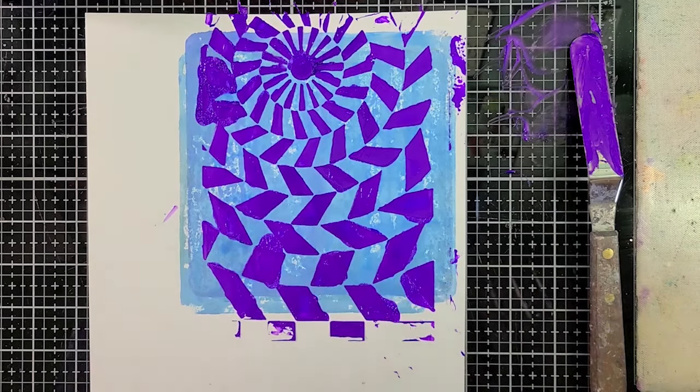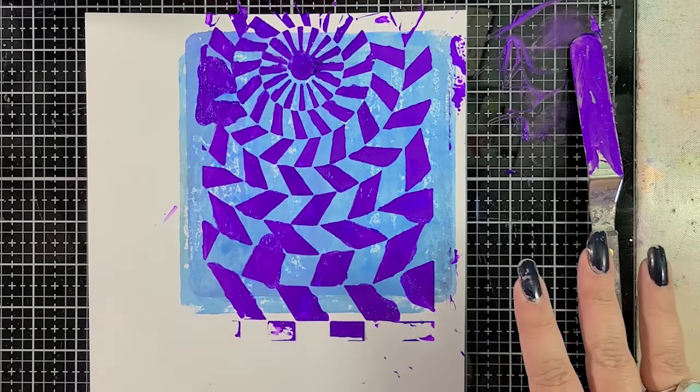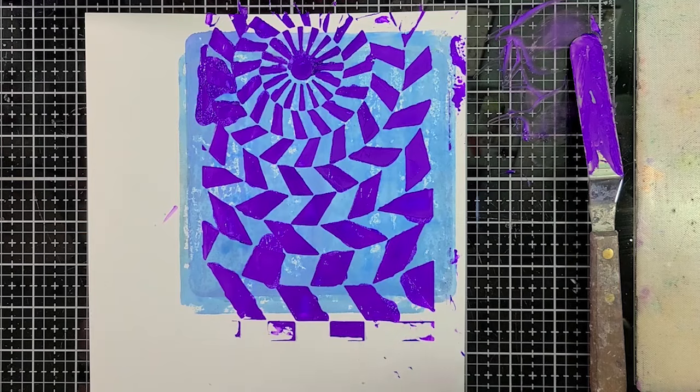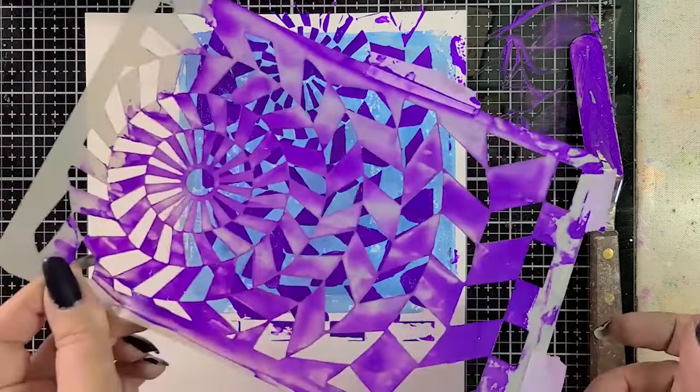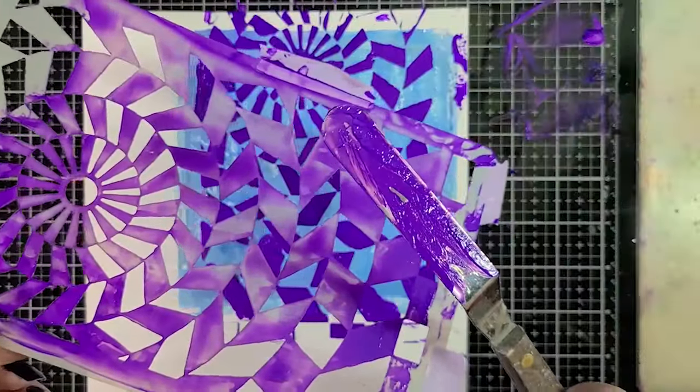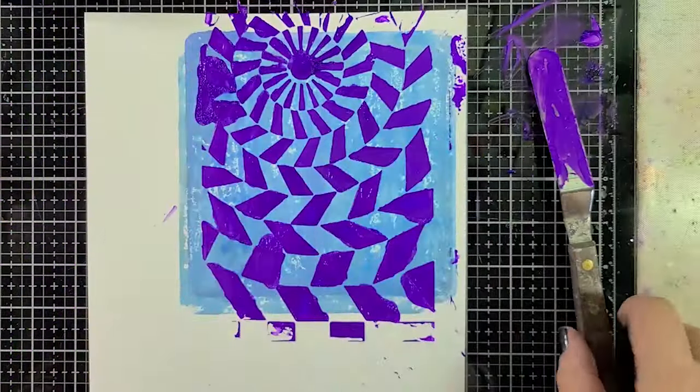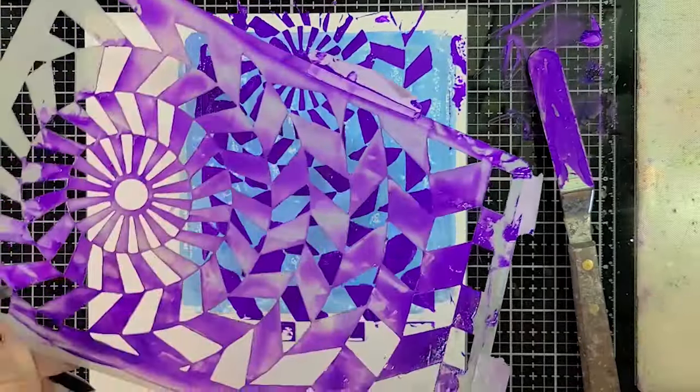So now what we need to do is let it dry and that's sometimes the hardest part is waiting for it to dry before we can move on. For now I'm going to go and wash these off because we don't want the paste to dry on our palette knife or on our stencils. So make sure you wash these things thoroughly and right away.